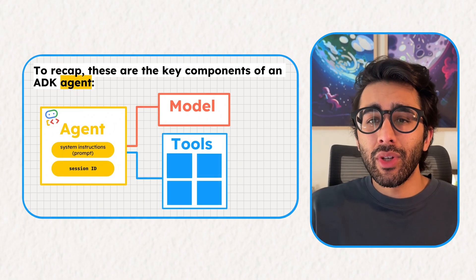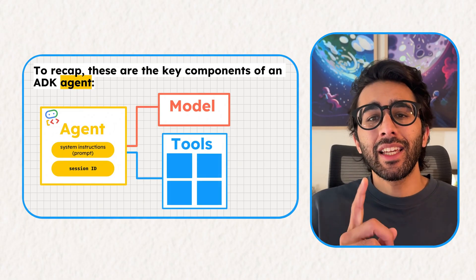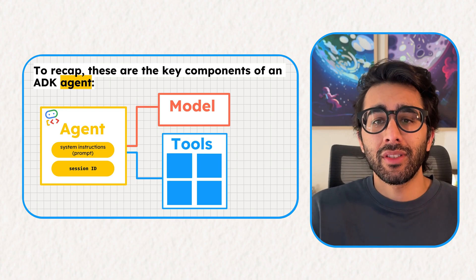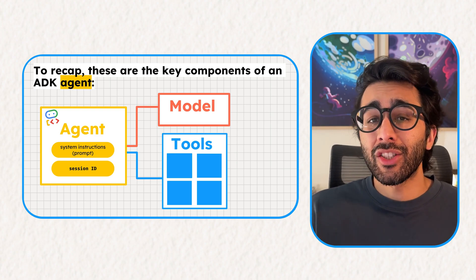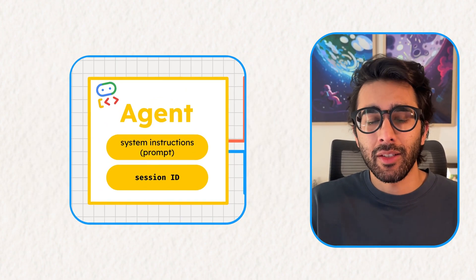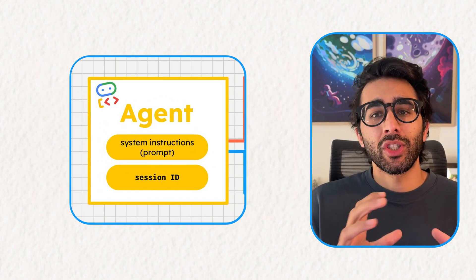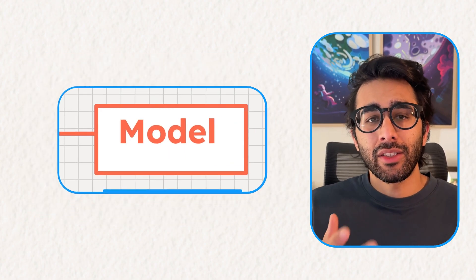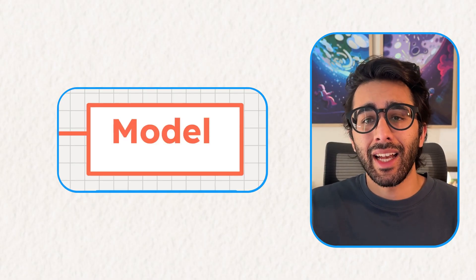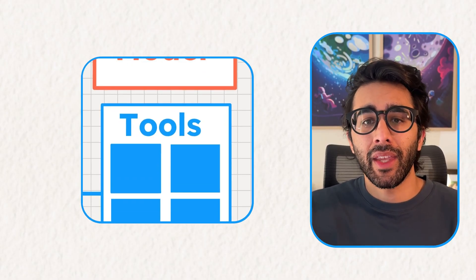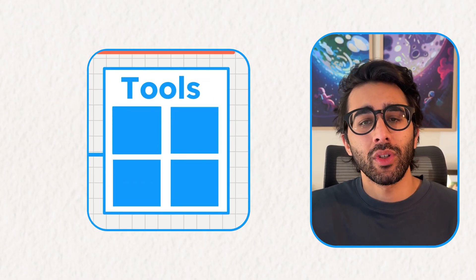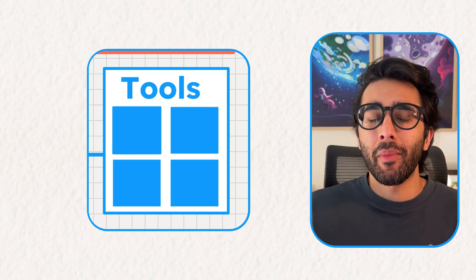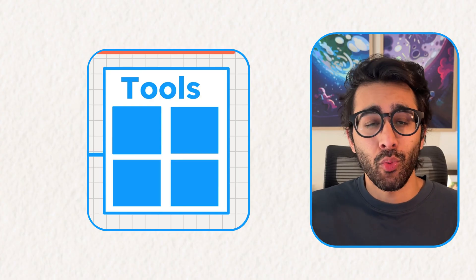Let's quickly recap some of the key components that make up a basic ADK agent. At its core, an agent has system instructions which define its personality and goals. It also has a model which acts as its brain, and a set of tools that act as its hands to perform actions in the world.